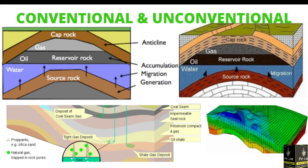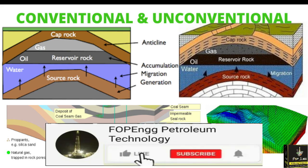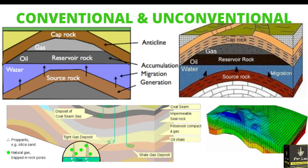Source rock وہ ہوتا ہے جہاں پر ہمارا hydrocarbons generation ہوتے ہیں، اس کے بعد migrate ہوتے ہیں reservoir rock میں جہاں وہ جمع ہو جاتے ہیں، اس کے بعد cap rock seal provide کرتا ہے جو اس کو surface میں آنے سے روکتا ہے۔ Conventional وہ reservoir ہوتا ہے جس میں ہم easily hydrocarbons produce کر سکتے ہیں۔ Unconventional وہ ہیں جو tight ہوتے ہیں، جس میں low permeability ہوتی ہے — اس کو recover کرنے کے لیے tertiary methods جیسے injection اور enhanced oil recovery methods apply کرنے پڑتے ہیں۔